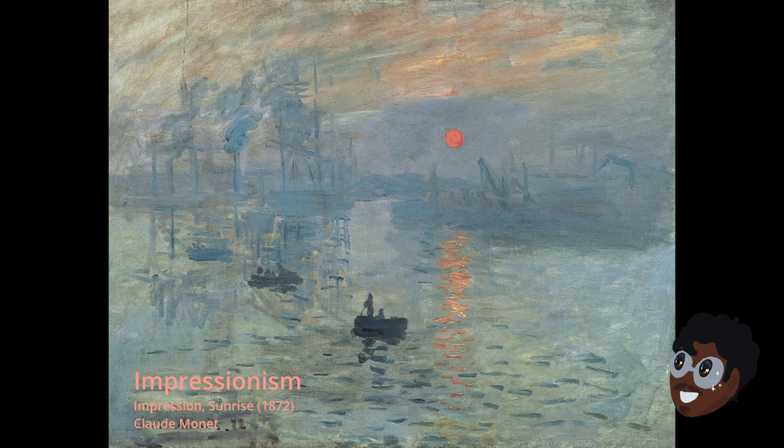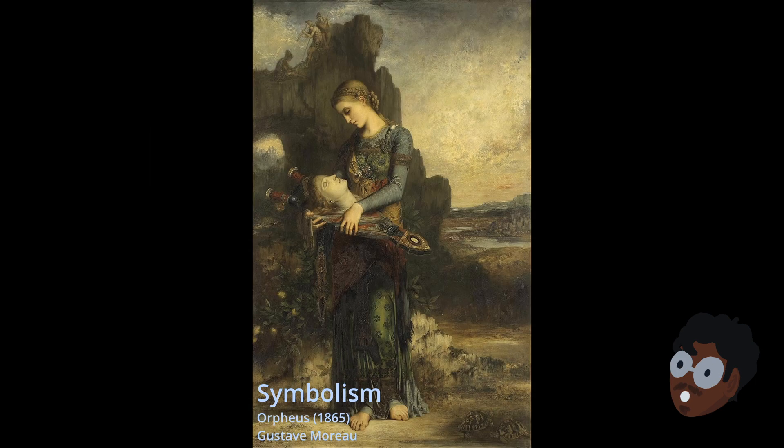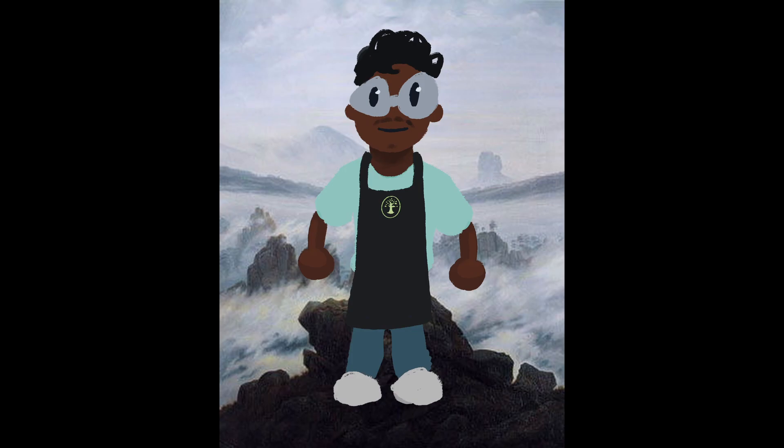The international movement of Symbolism followed Impressionism in the late 19th century and shared many traits of Romanticism, such as a focus on emotions and subjectivity over realism.